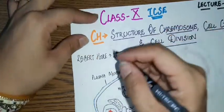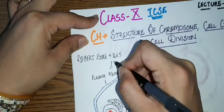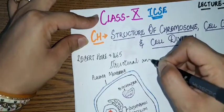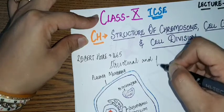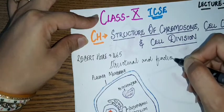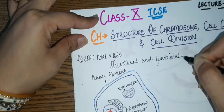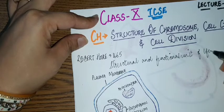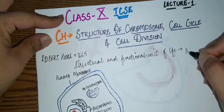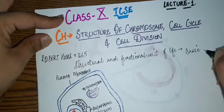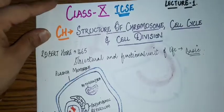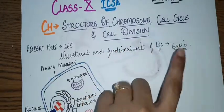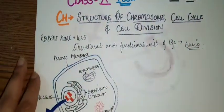What is a cell? It is the structural and functional unit of life, meaning it is the basic unit of life.